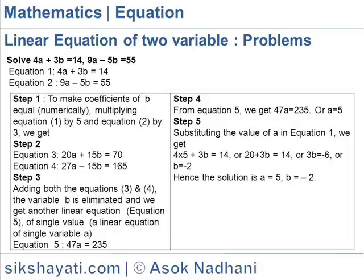Equation five gives us: 47a is equal to 235. In step four, from equation five, 47a equals 235, so a is equal to 5. In step five, we substitute the value of a into equation one: 4 times 5 plus 3b equals 14, which gives 20 plus 3b equals 14.